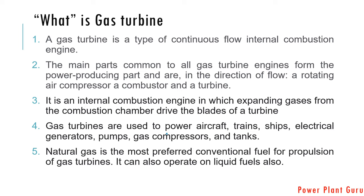So a gas turbine is a kind of IC engine, which we all have studied in our engineering. The main parts of gas turbines are arranged in a sequential series axial flow arrangement: first comes the compressor, then the combustion chamber, then the turbine, and then there is the exhaust.